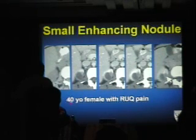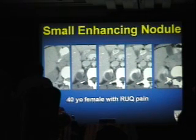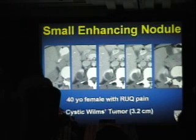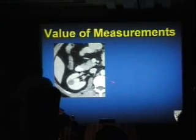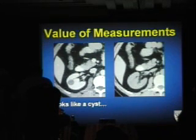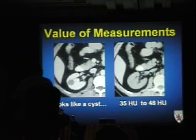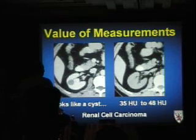Here's a 40-year-old woman with right flank pain and a small enhancing nodule in a cystic lesion — young patient, malignant. Could be a Wilms' tumor, which can extend into early adult life and can be cystic. For value of measurements: looking at an enhanced CT you might say it's a cyst, but on the unenhanced CT you see it's not. Measurements went from 35 to 48 HU — equivocal enhancement — and it turned out to be a renal cell. Don't use your eye alone to determine enhancement; put measurements on these lesions.